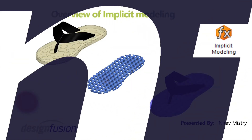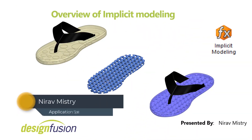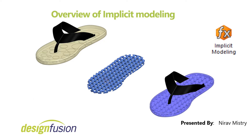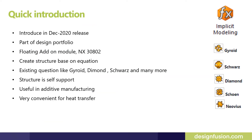Hello, welcome to Design Fusion. My name is Nero Mystery and today we will see an overview of the brand new feature that is implicit modeling. Siemens introduced this application in the December 2020 release, and it is part of the design portfolio from Siemens NX. It comes as a floating add-on license and the product code is NX 30802.